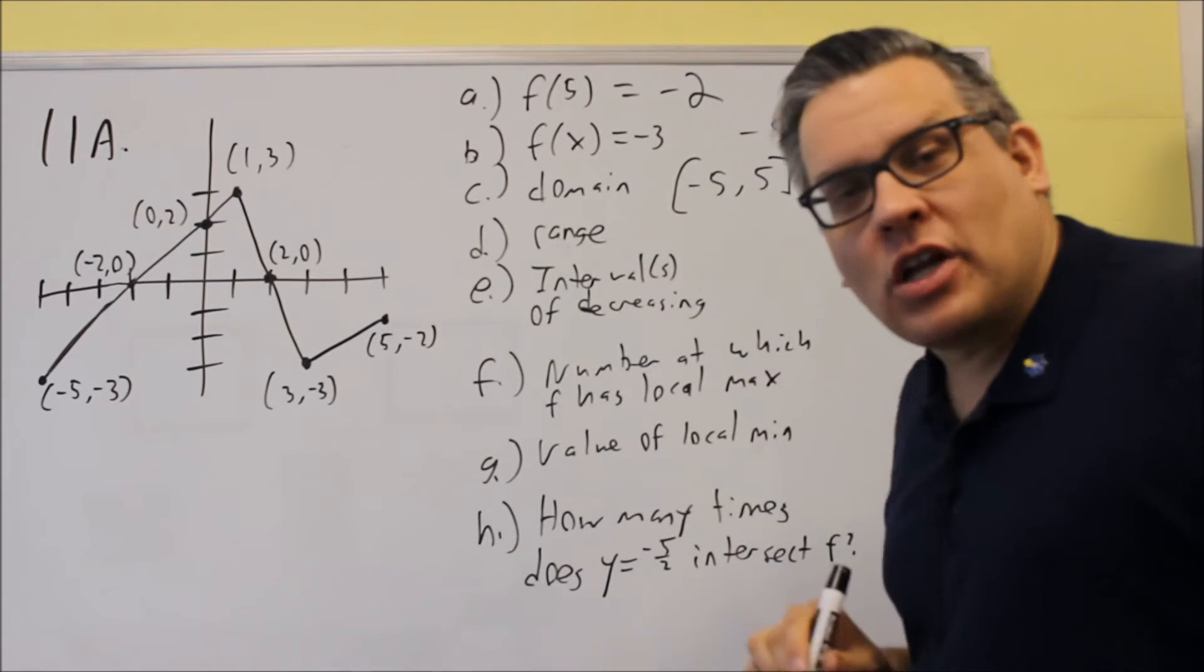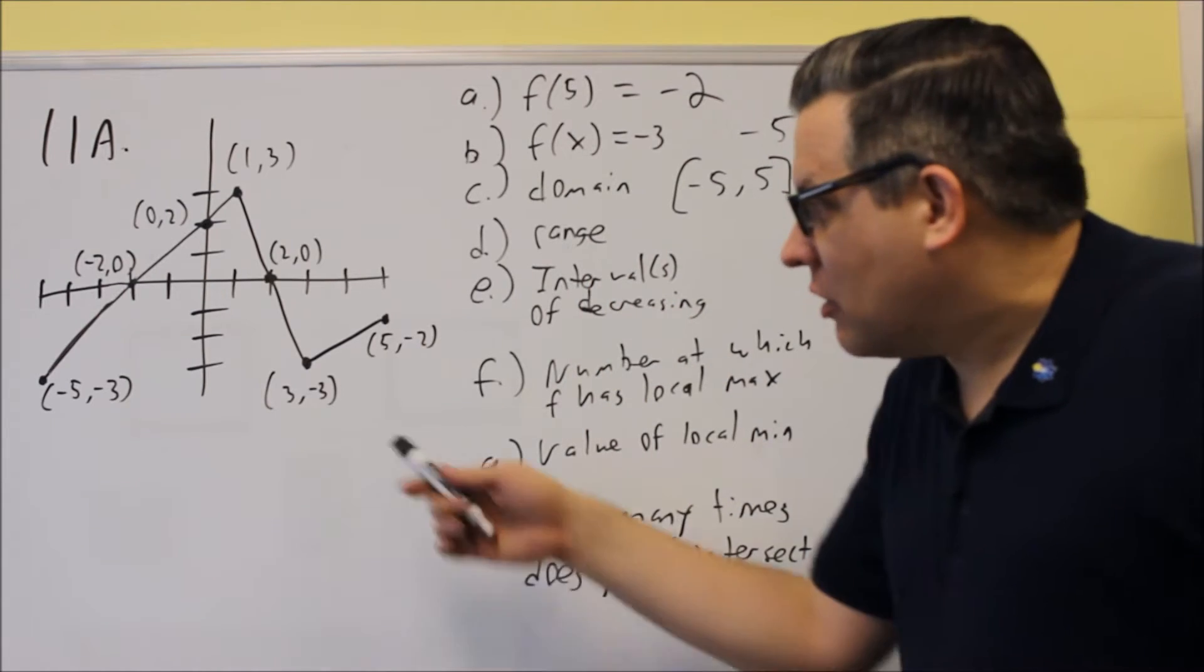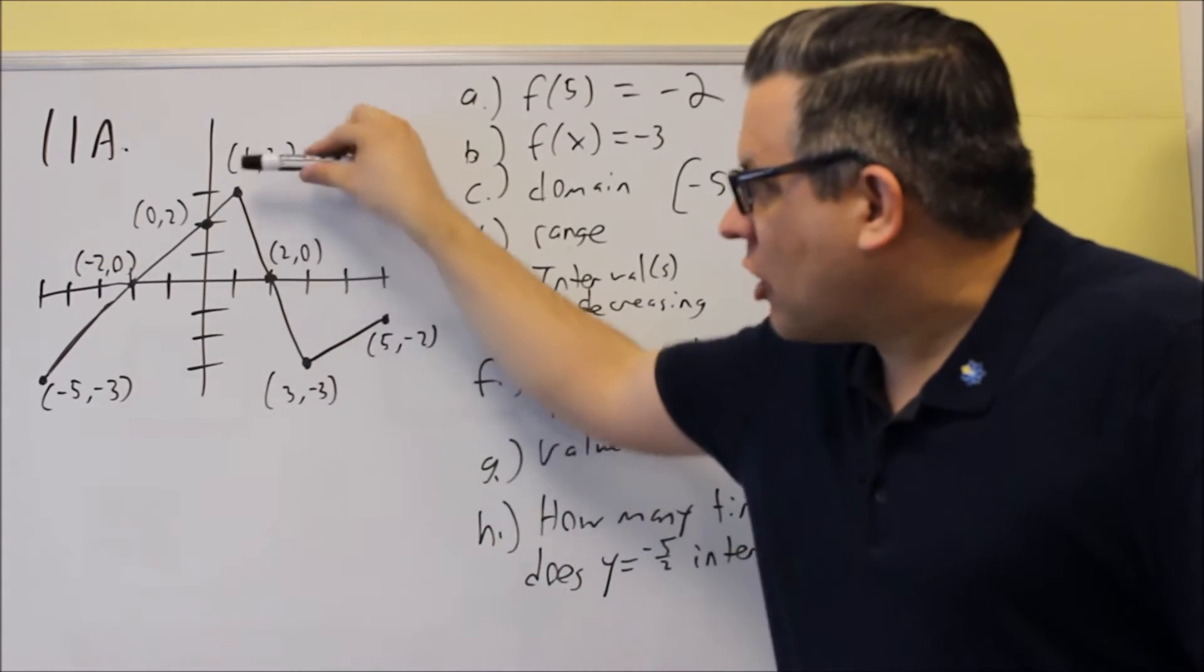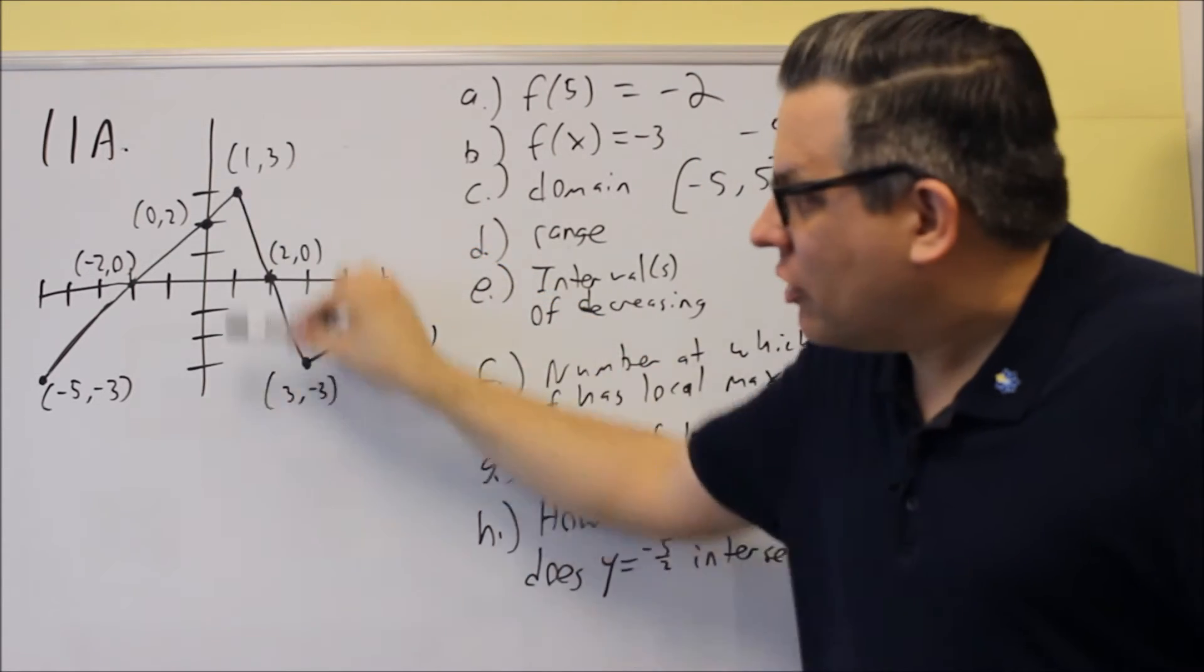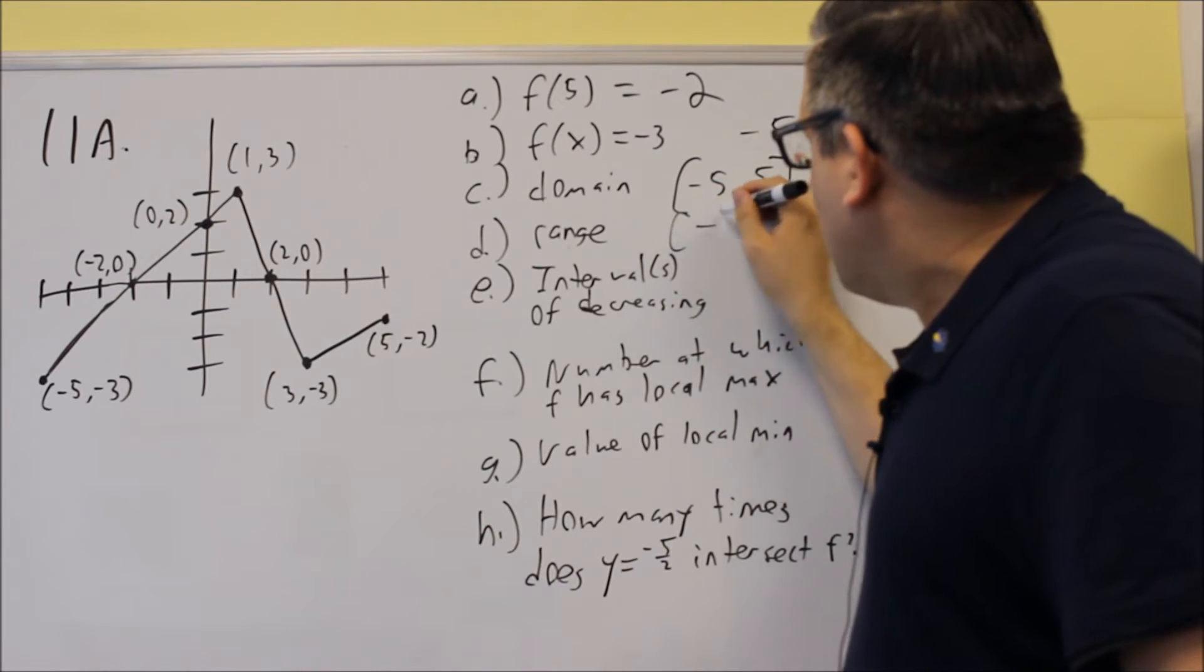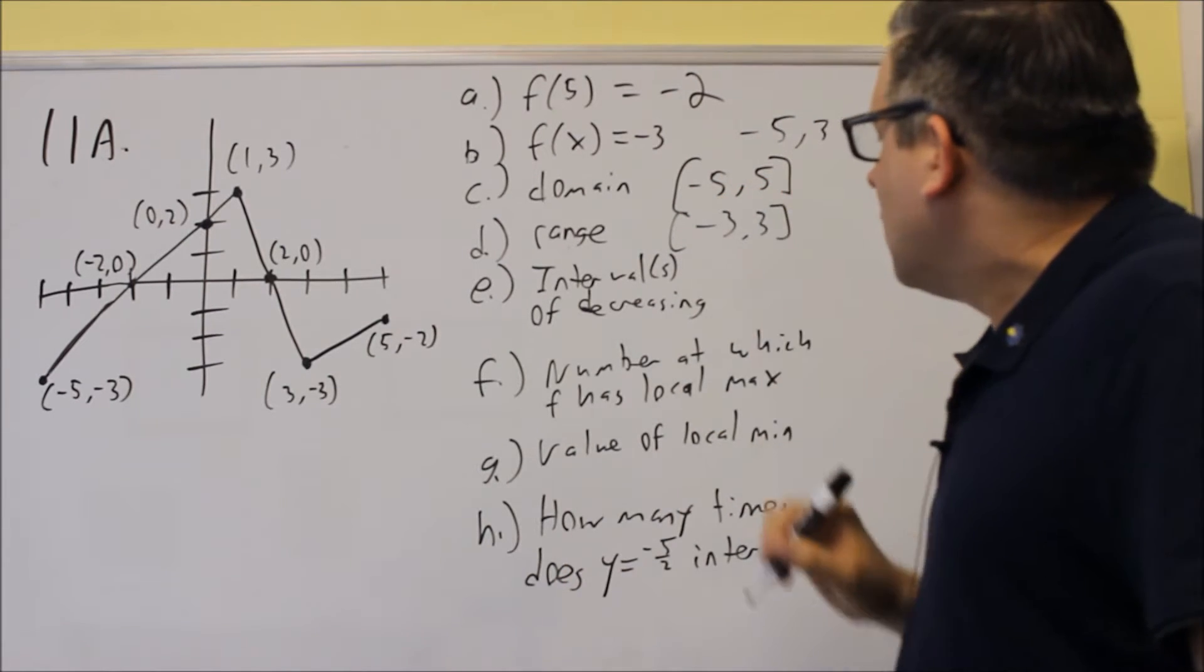Next, we're going to look at range. Range is the y values the graph is using. Now the smallest y value is negative 3, and that goes all the way up to 3. So the y values will occur in between those. So this is going to be negative 3 to 3 with a bracket.